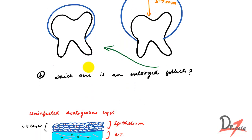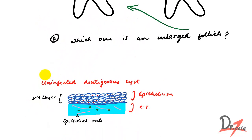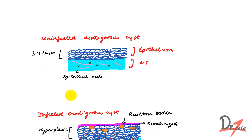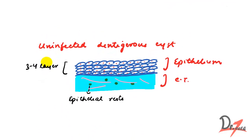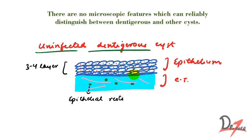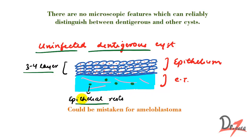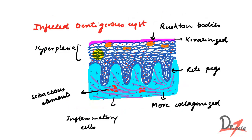For histopathology, we have two presentations — uninfected and infected. In the uninfected dentigerous cyst, the epithelium is flat with 3 to 4 layers and is non-keratinized. The connective tissue has loosely arranged fibers and there are epithelial rests. In the infected dentigerous cyst, we find hyperplasia, and the epithelium is keratinized.